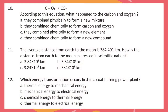Question 10: C + O₂ → CO₂. According to this equation, what happened to the carbon and oxygen? Question 11: The average distance from Earth to the Moon is 384,401 km. How is the distance from Earth to the Moon expressed in scientific notation?